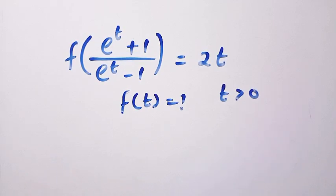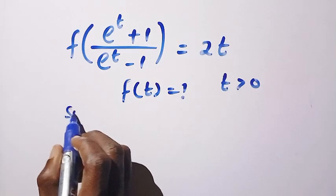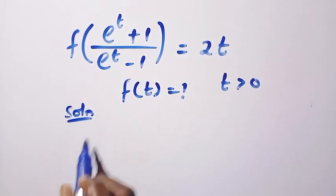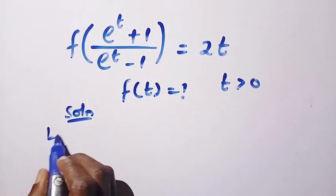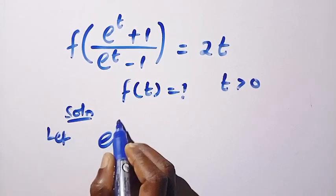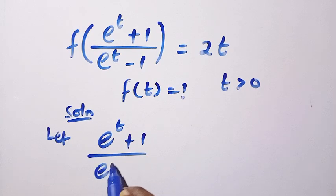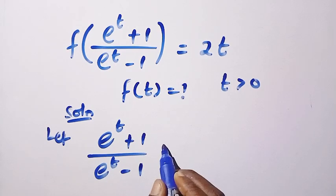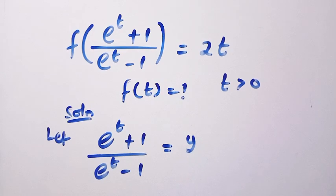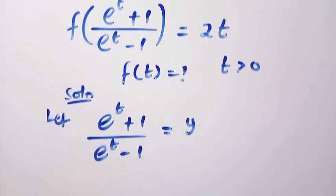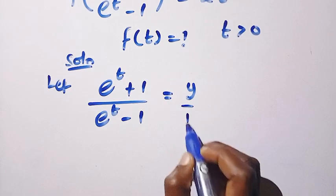To solve this, we are going to consider the solution first. From what we have, suppose I let (e^t + 1)/(e^t - 1) equal y. Then we are going to make t the subject of the formula. To do that, we have to cross-multiply first.